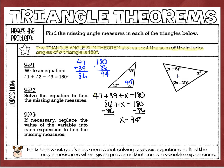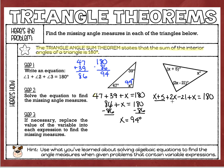The second example is a little more involved because we have some variables, but that's okay. We're going to take our three angle measures: the first one is x plus 5, the second is 2x minus 21, and the third angle is just a plain x. All three of these angles together are going to equal 180 degrees, because it's a triangle, and a triangle has to equal 180.